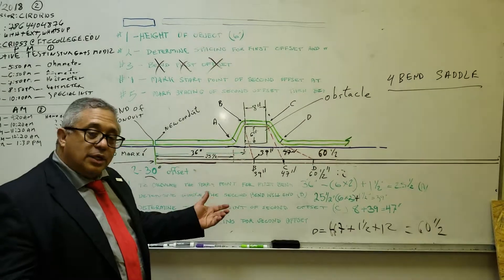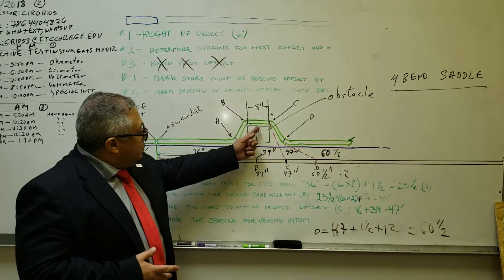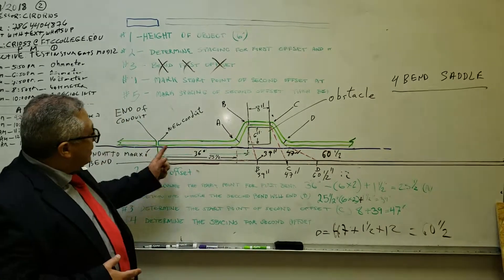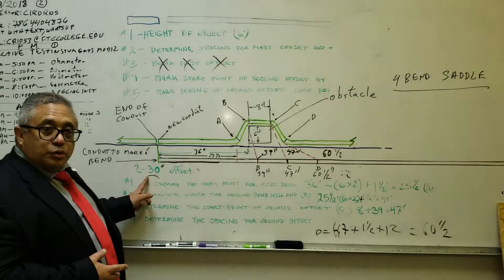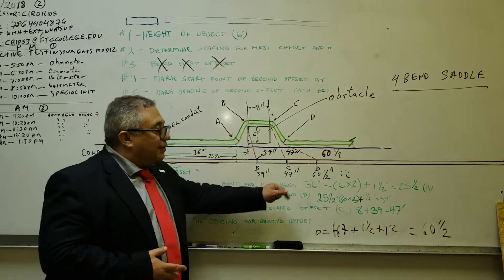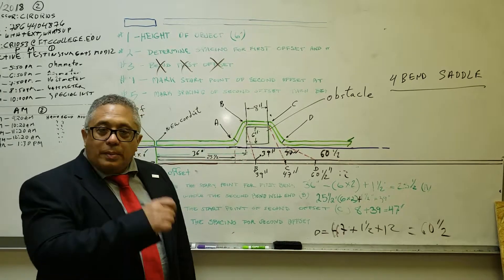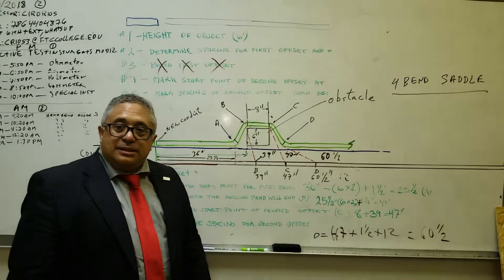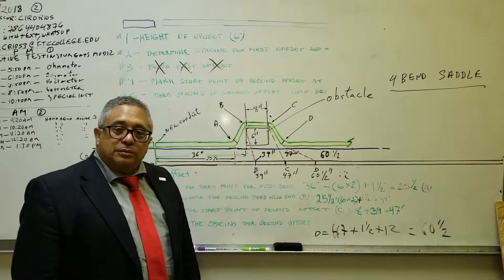In reality, you can download an application to your phone, input the height, the width, the distance to the obstacle, and the angle, and it will give us the 4 points we need to mark the conduit with. We mark it and we bend it. And this is as easy as this. This is how you do the four-bend saddle. Thank you.